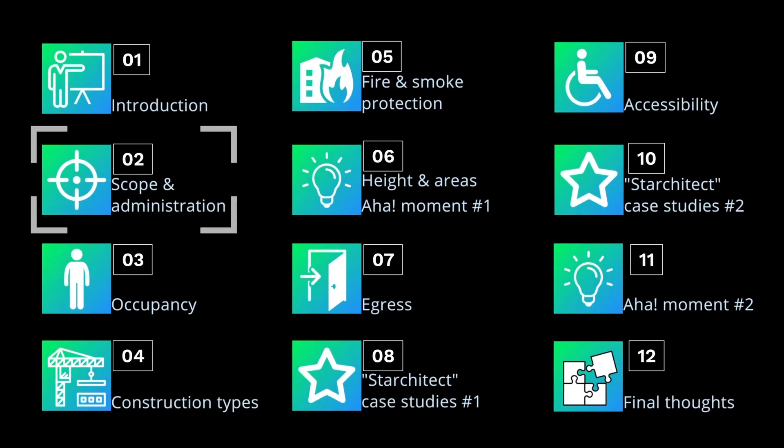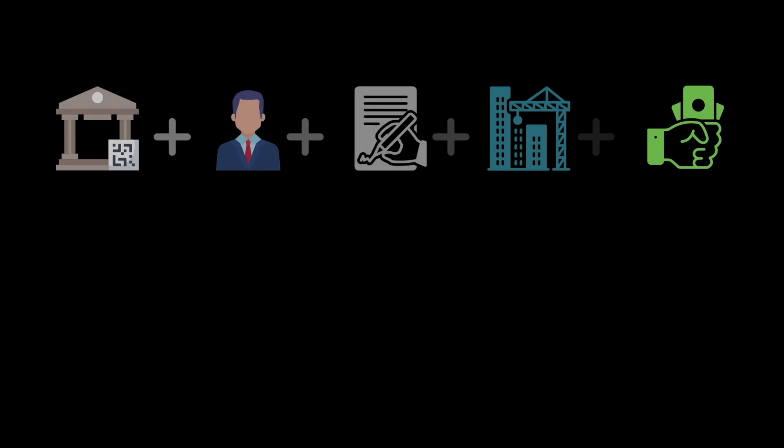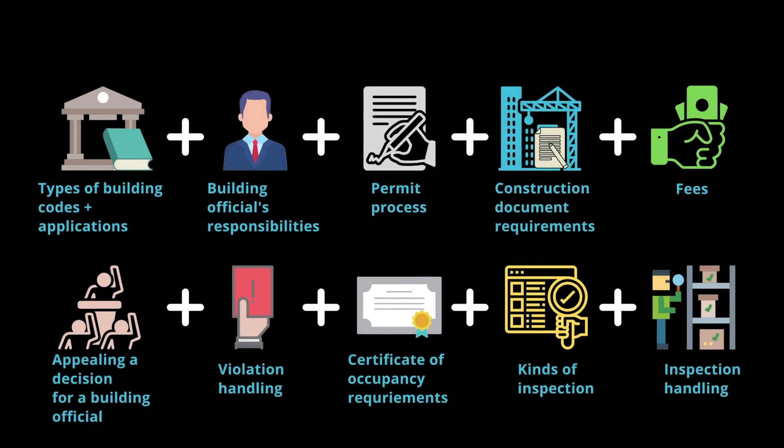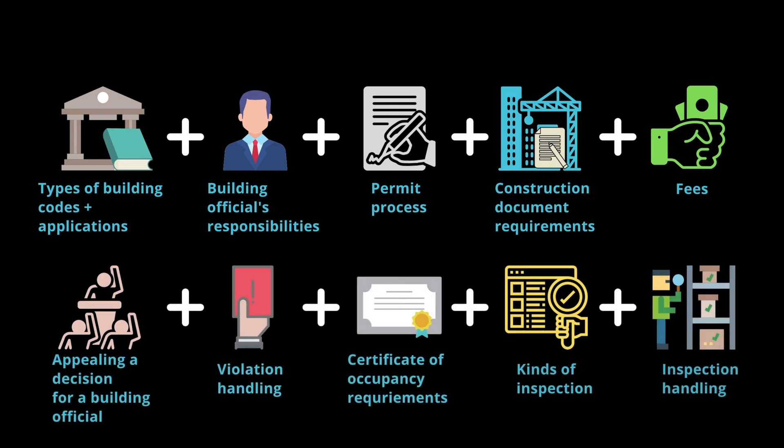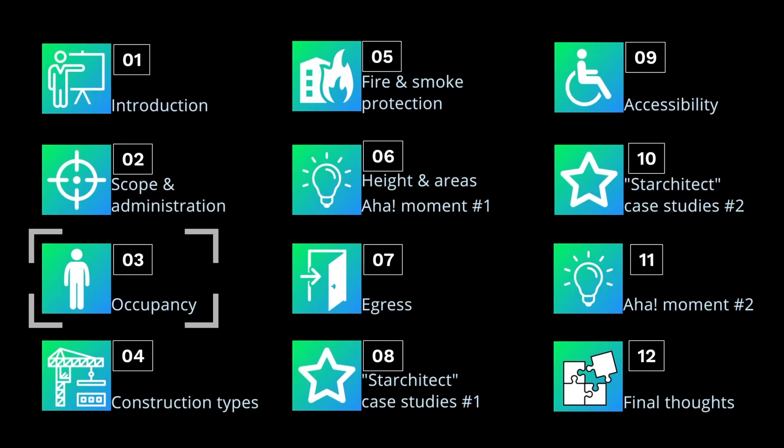All the building codes in the world dedicate at least a chapter talking about its administration, describing how the code should be applied. The typical coverage of this chapter are these factors shown. This chapter covers a project from the pre-design phase to construction administration.